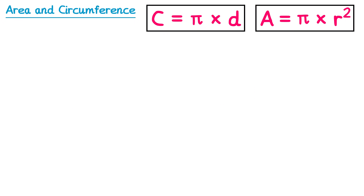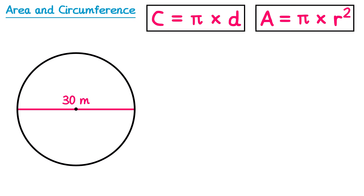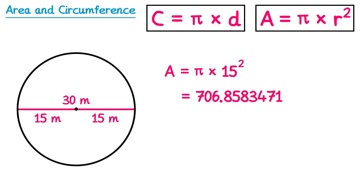Let's try a second example. For this circle, we've been given the diameter. So area equals pi multiplied by the radius. Now the radius of this one is not 30 — that's the diameter. If you halve 30, you get 15, so each radius is 15 metres. So it's times 15 squared. If you type this into your calculator, you get this number, which rounds to 706.9 metres squared.